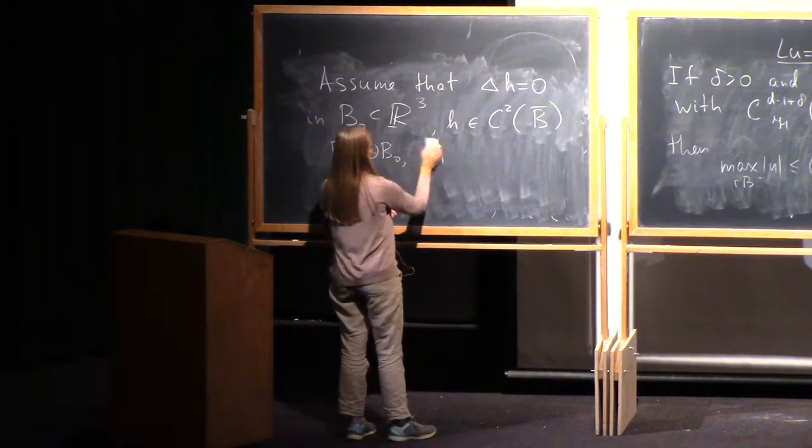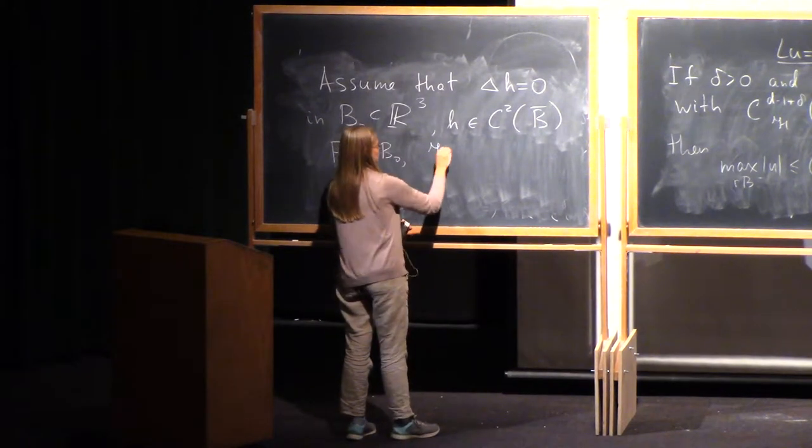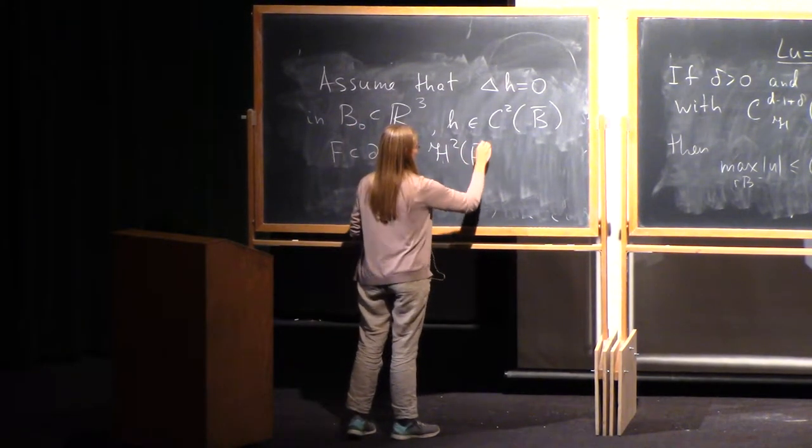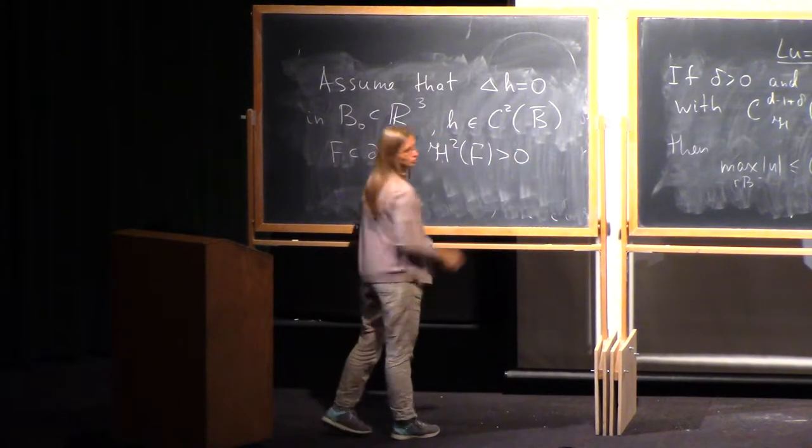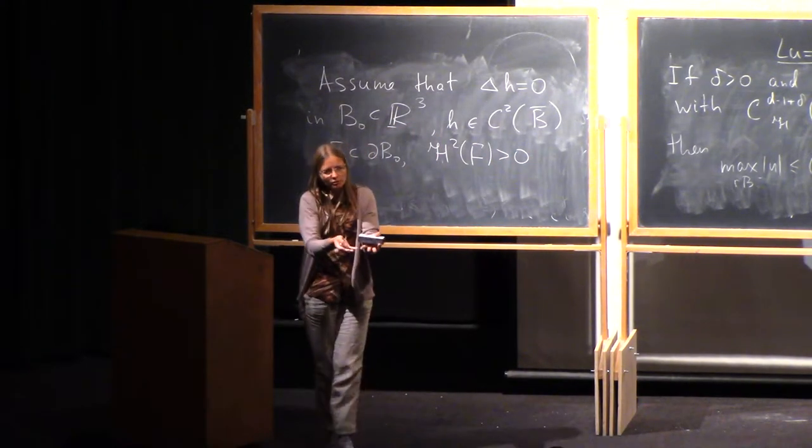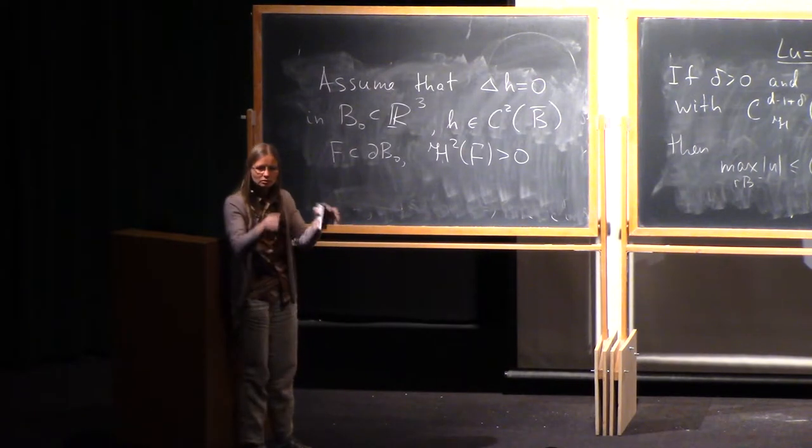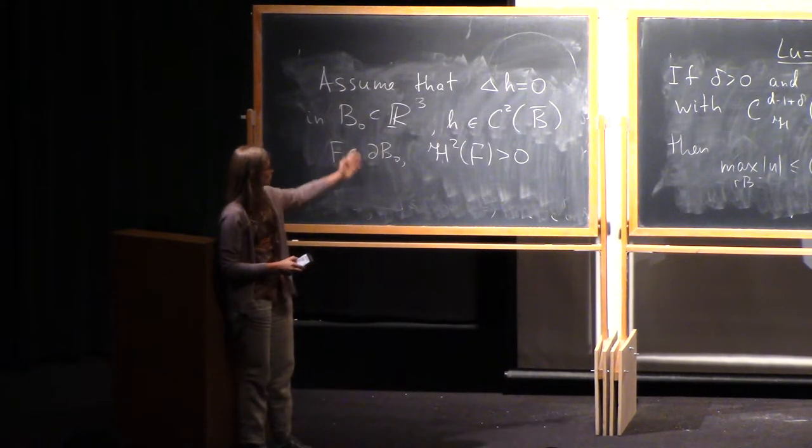on the boundary of positive Hausdorff measure of dimension d-1. It's a set on the boundary of positive measure. The dimension of the boundary is 2 in case of R³.